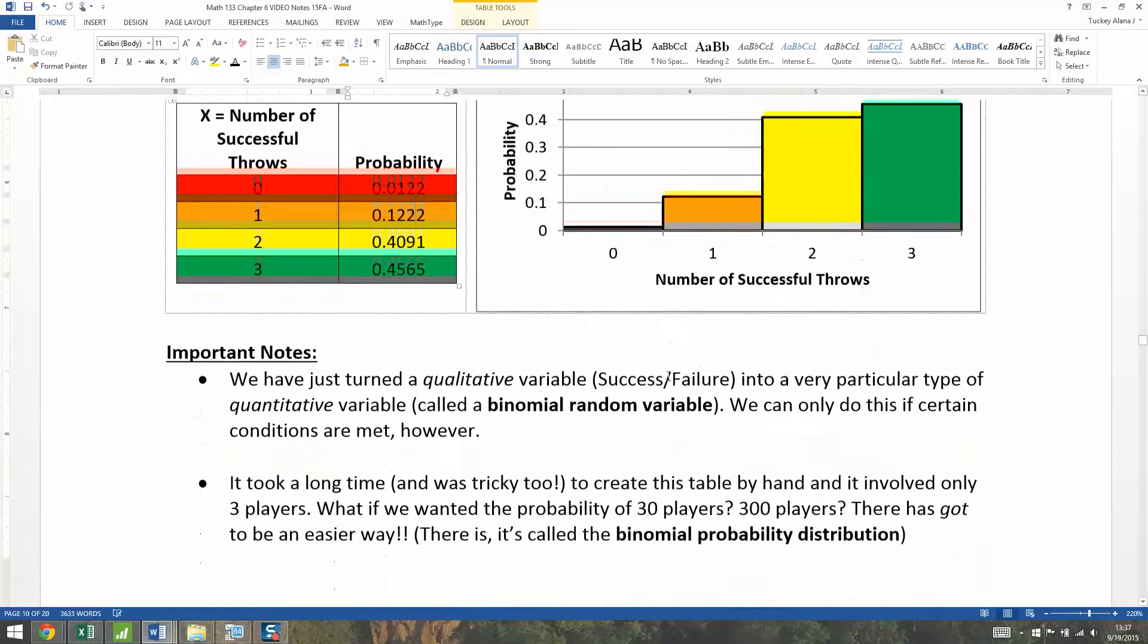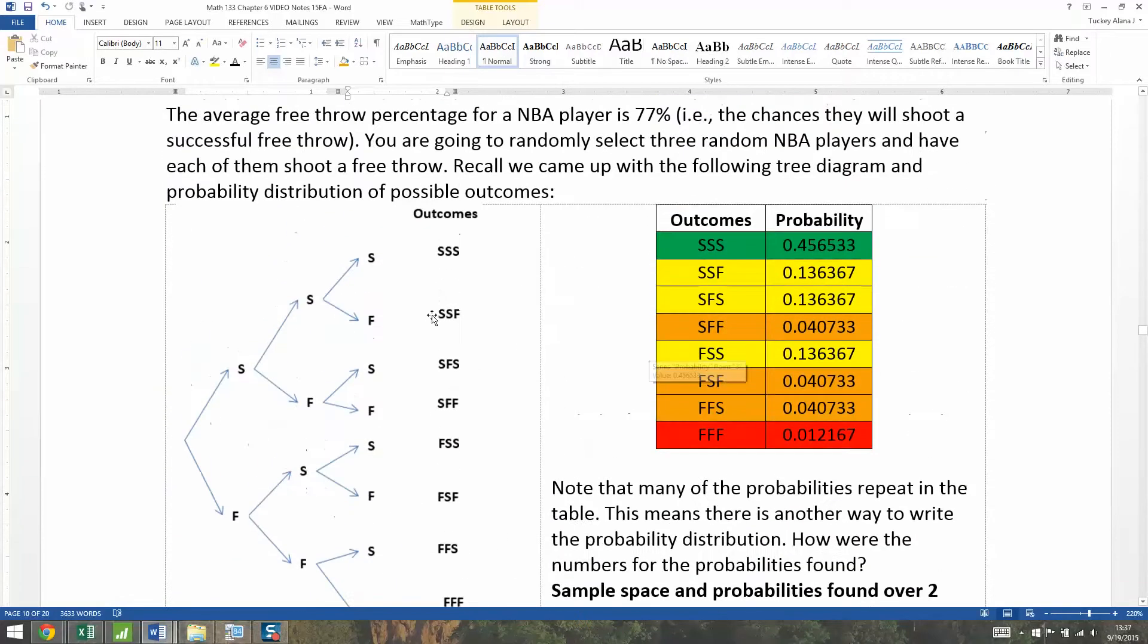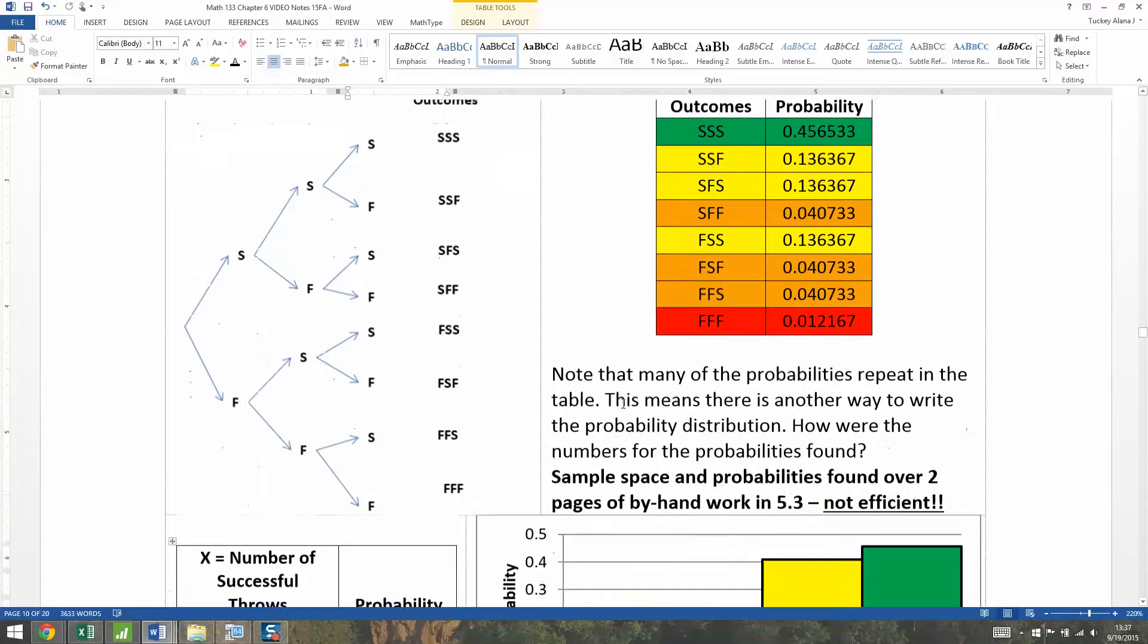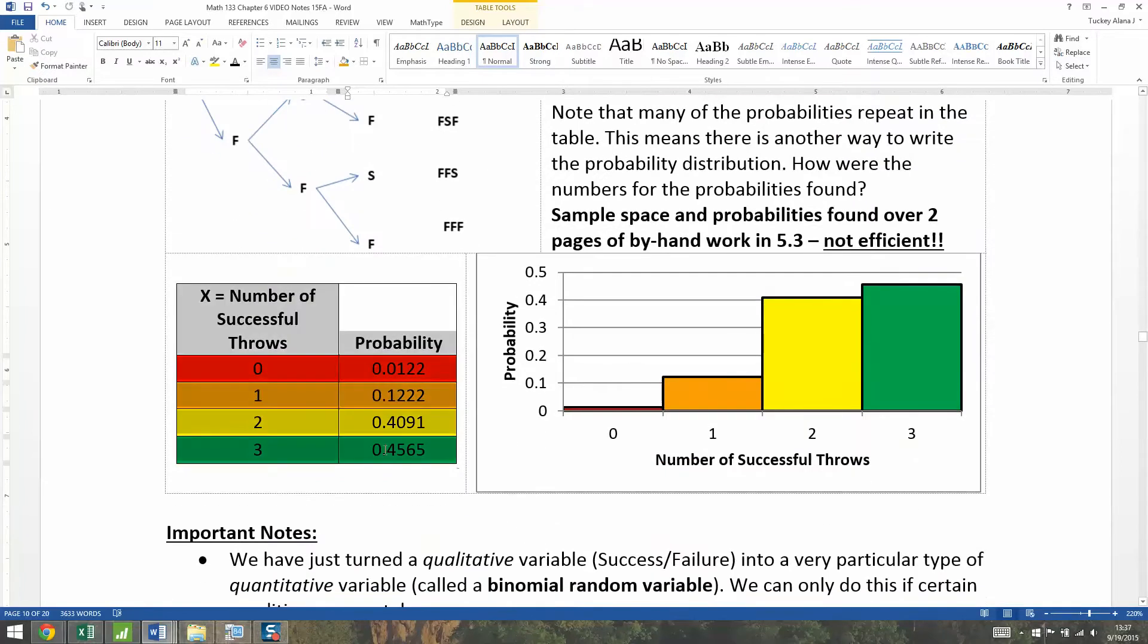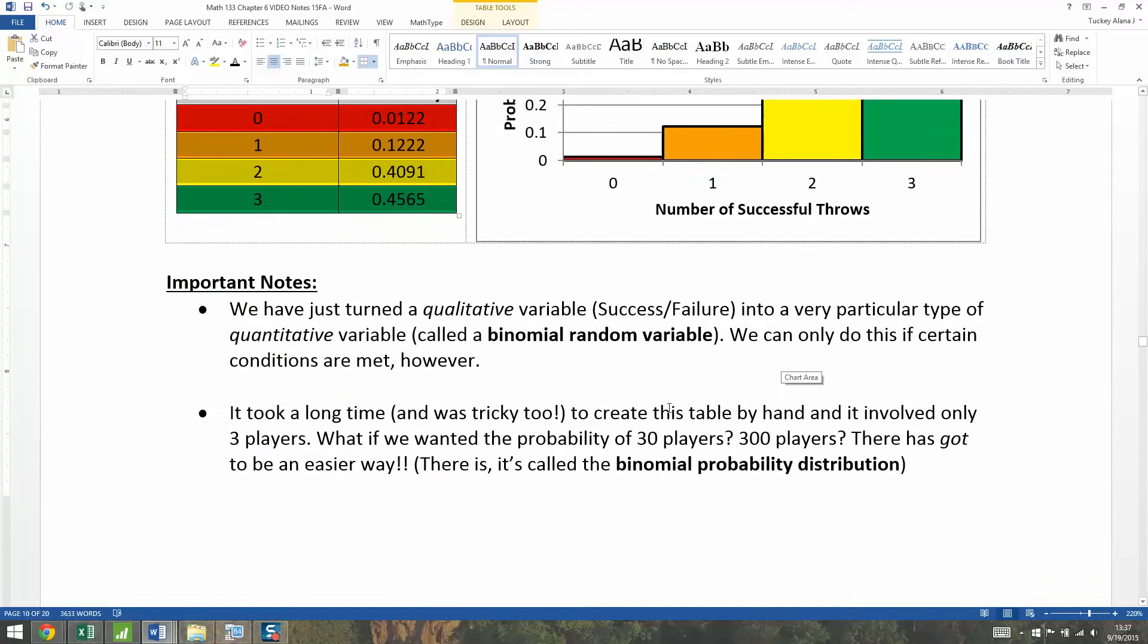The problem with all of this is that it took us a long time to do. First, we created a tree diagram, and then we had to come up with this lovely table. Then we converted that table into this random variable, and then we drew a histogram from it. That takes a long time. And this was only three players. What if we wanted to do it for 30 players, for 300 players?